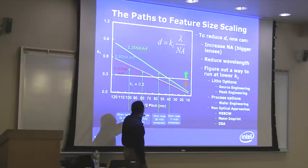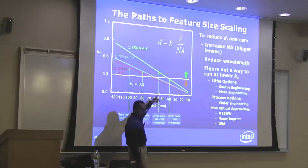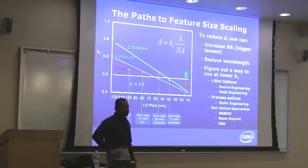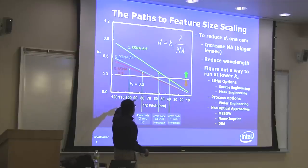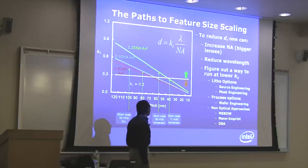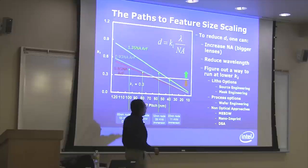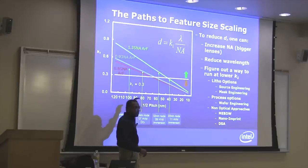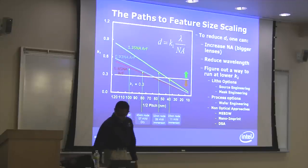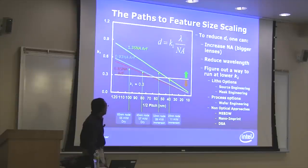When we went to 32 nanometer, it was clear that staying on those old tools would have fallen below that white line. So we had to move up to 1.35 NA, which is something called an immersion scanner — we use water between the lens and the wafer to improve resolution. For 22 nanometers we're still right around K1 of 0.3 and managed to make this work with 1.35 NA ArF. To reduce feature size, you can get bigger lenses, reduce the wavelength, or figure out a way to run at lower K1.